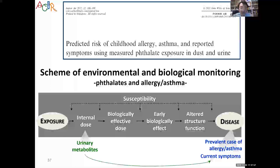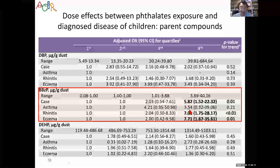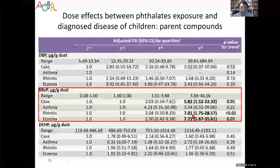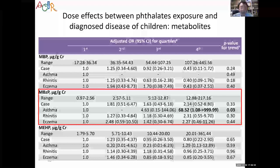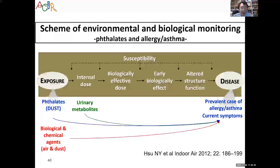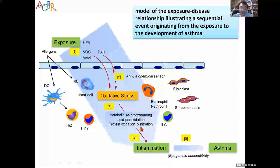We measured phthalate metabolites in urine to confirm actual exposure to indoor plastic environments. The table shows that increased phthalate exposure — measured as DEHP and BBCP — significantly increases odds ratios for asthma by more than 7-fold. Other metabolites showed the same effect. Environmental and biological monitoring confirms that exposure to volatile compounds like formaldehyde and phthalates increases oxidative stress and Type 2 cytokine inflammation, increasing the chance of developing asthma.